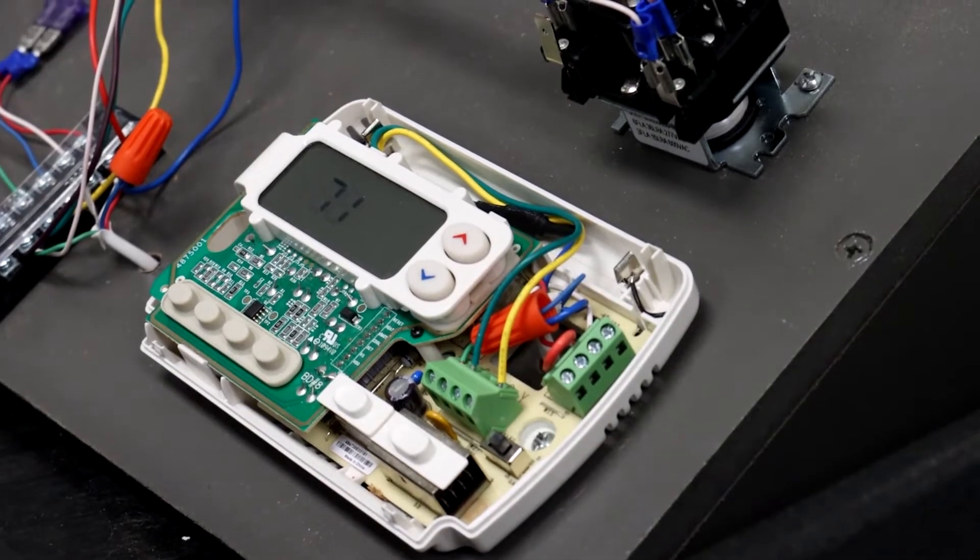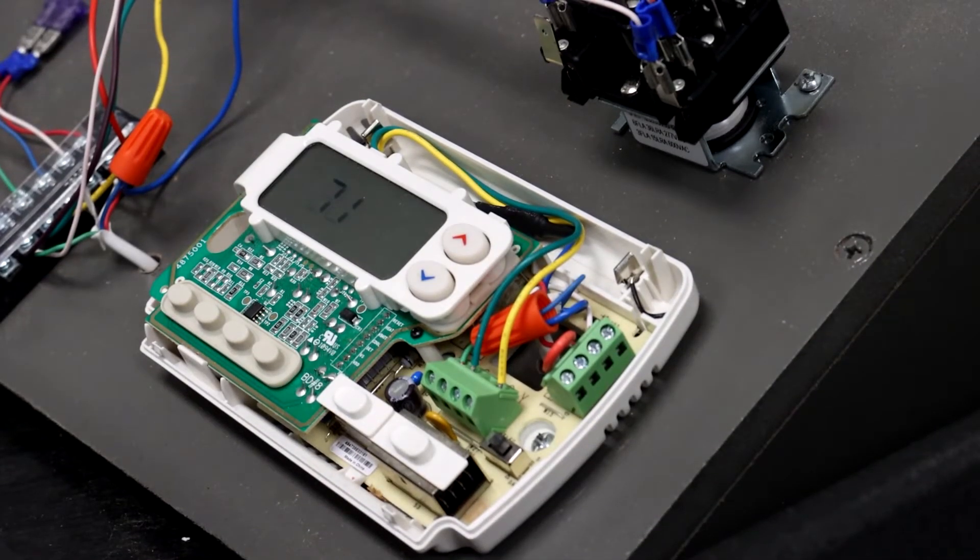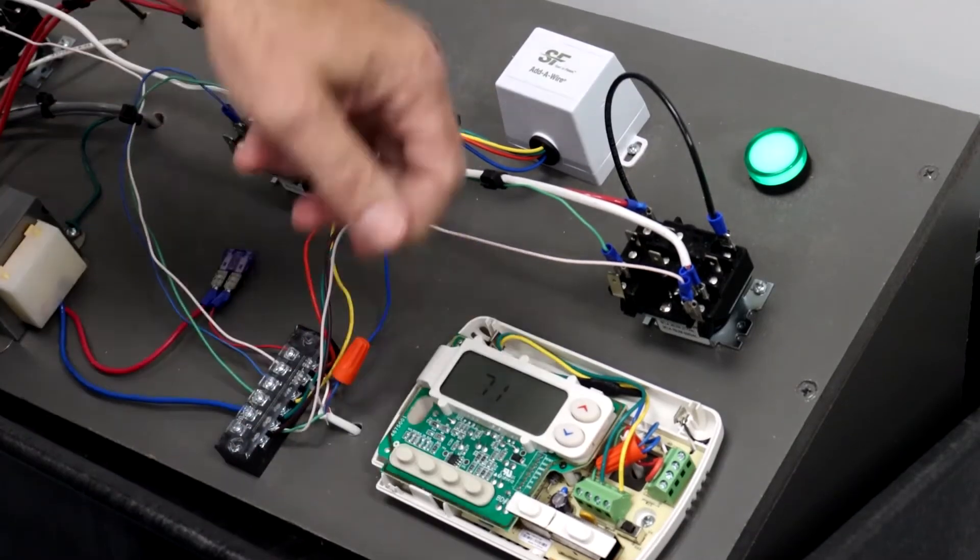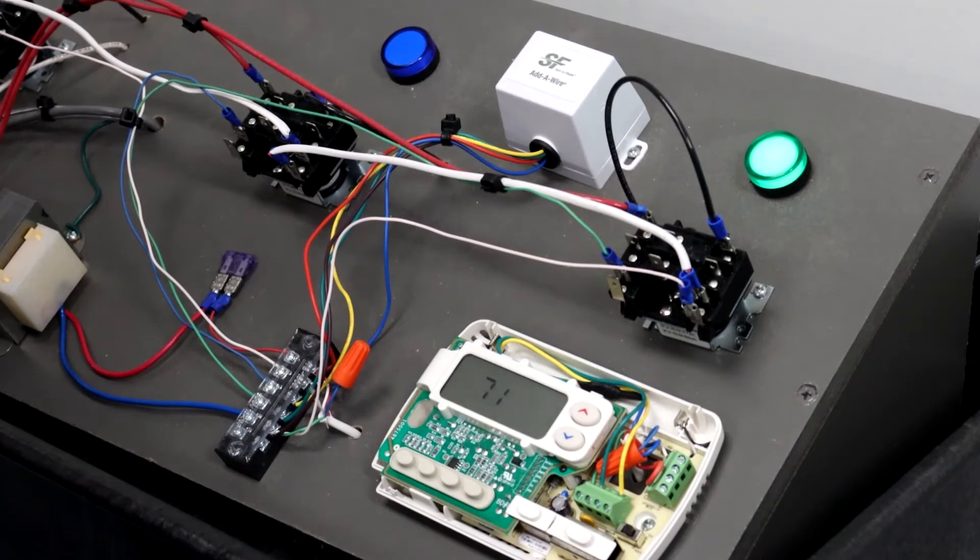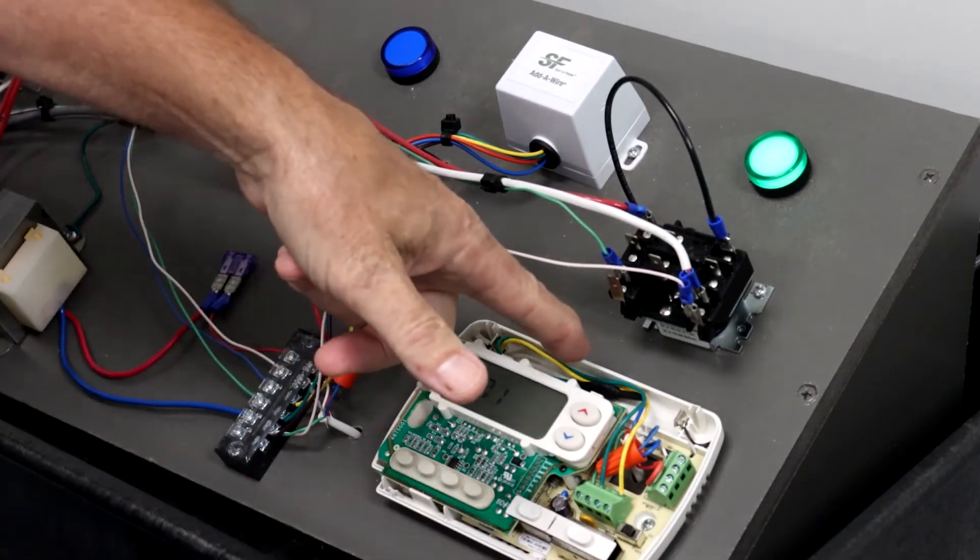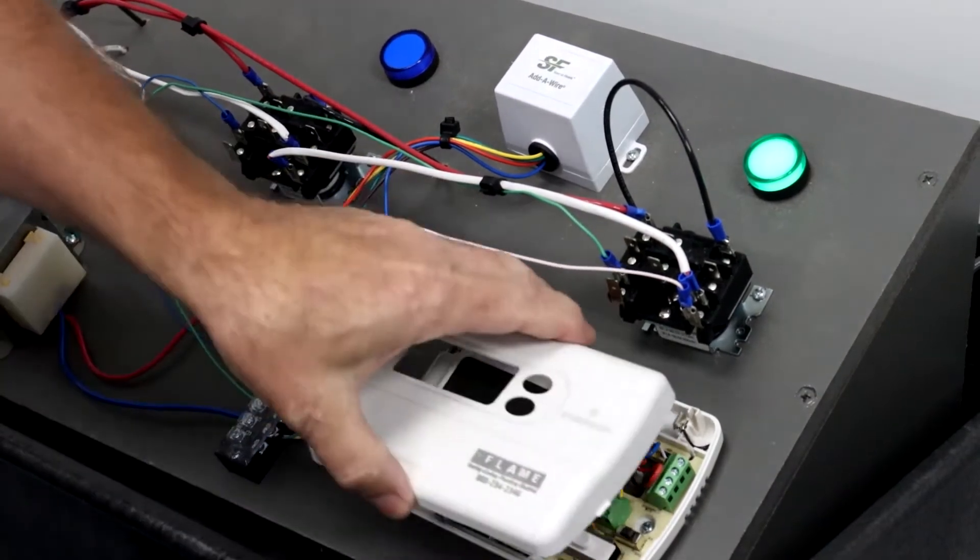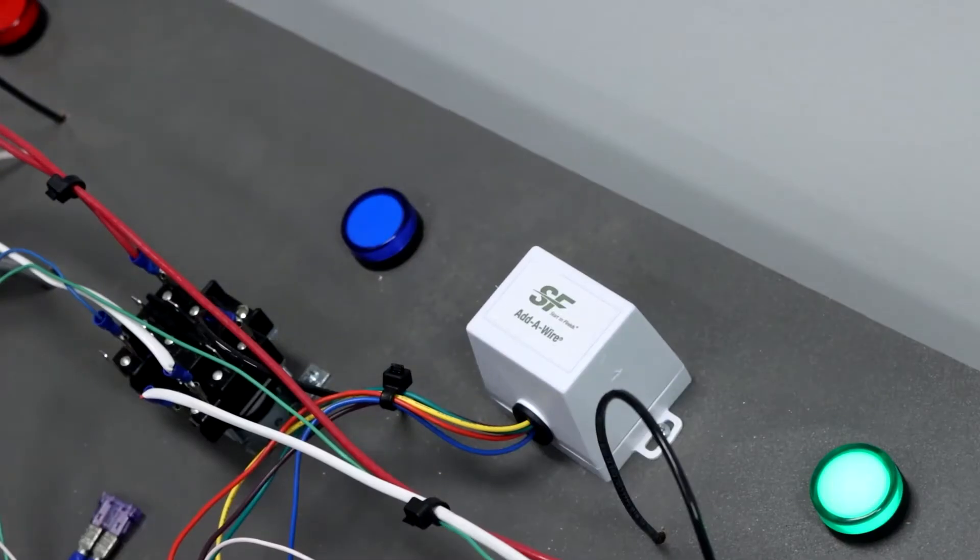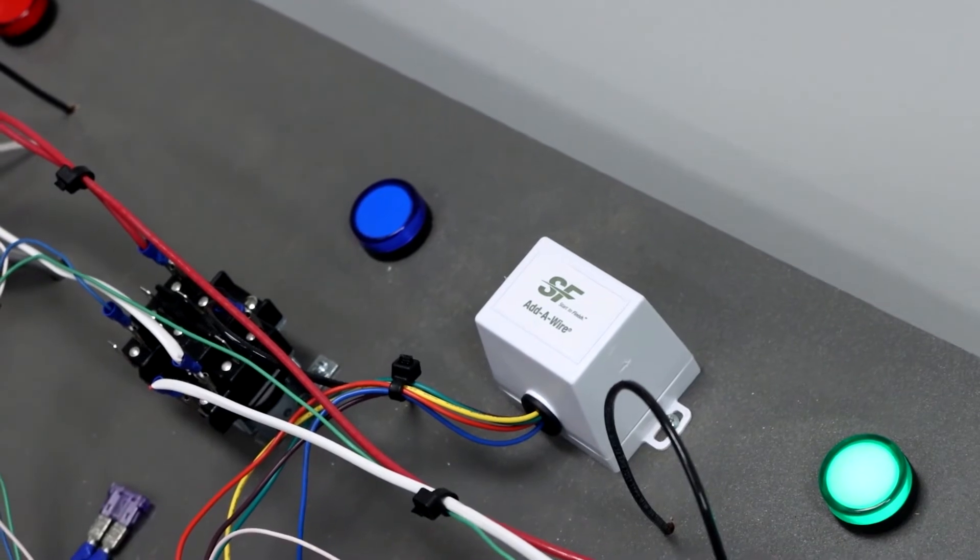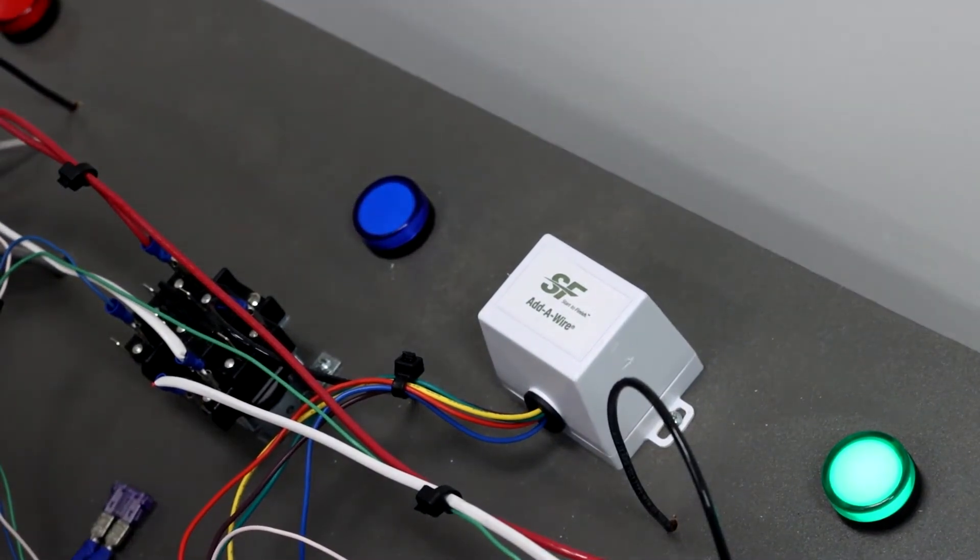Thermostats come with batteries so they can store the program. In this case with the ETA wire, what it does is it takes four wires and makes it five wires, so that way we could get rid of the batteries and now the thermostats are hardwired. As long as there's power to the furnace, there's power to the thermostat, we don't need any batteries.